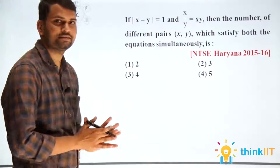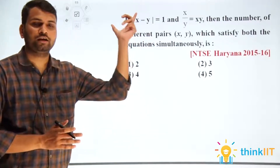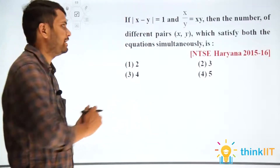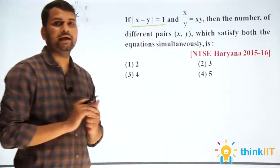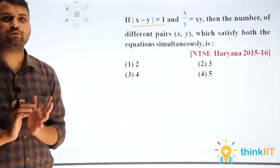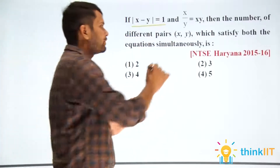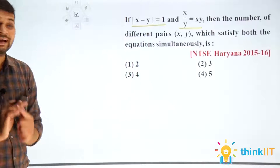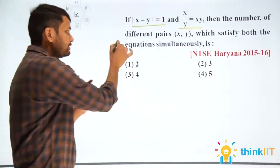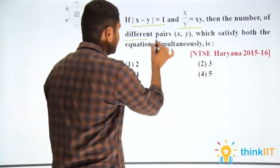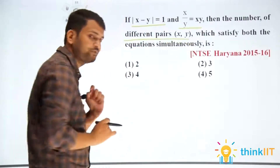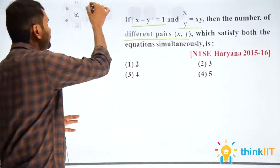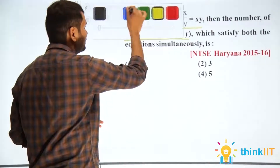Hello students, let's discuss the question. The question is: mod of x minus y is equal to 1, and x upon y is equal to xy. Then the number of different pairs of x and y which satisfy both equations simultaneously — we have to find all such pairs.